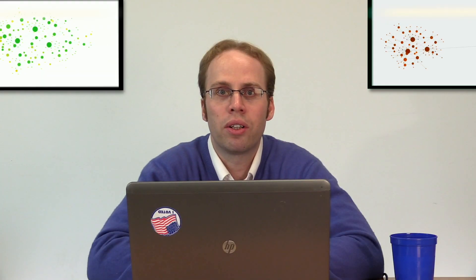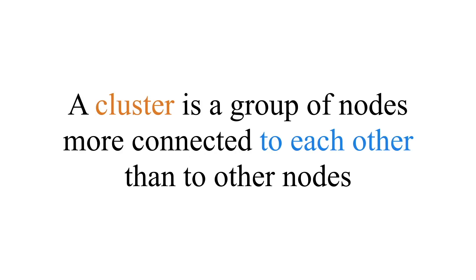Transitivity is related to our next concept, which is clustering. The clustering coefficient measures the extent to which nodes tend to cluster together or be grouped together. A cluster, definitionally, is a group of nodes that are more connected with each other than they are connected with everybody else.